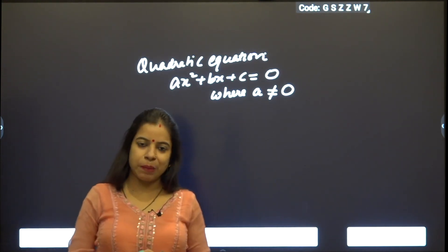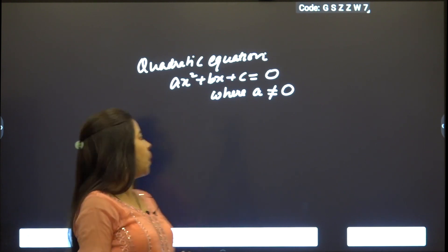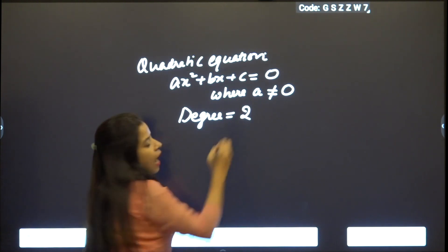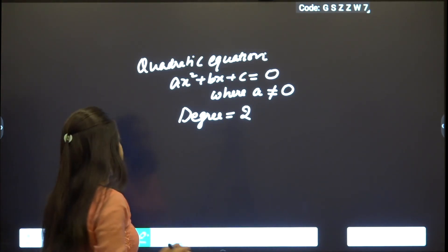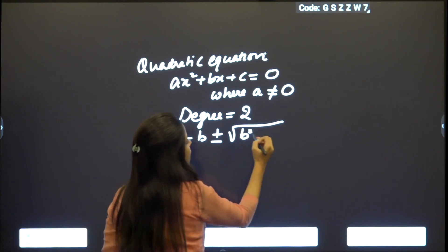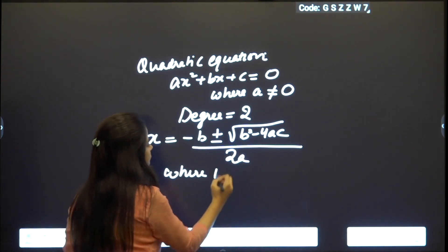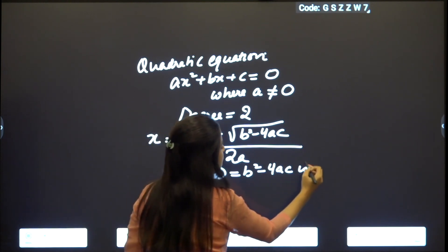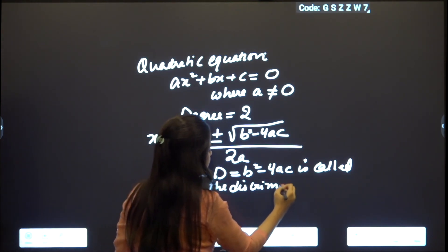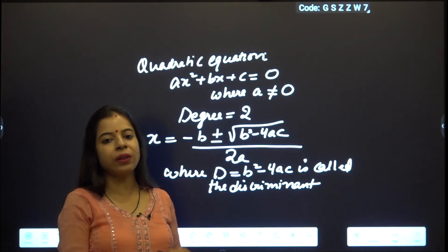By the fundamental theorem of algebra, every nonzero polynomial of degree n has n roots. So a quadratic equation has degree 2, meaning it has two roots or zeros, given by the formula x = (−B ± √(B² − 4AC)) / 2A, where D = B² − 4AC is called the discriminant. This is the formula we use to find the roots of a quadratic equation.